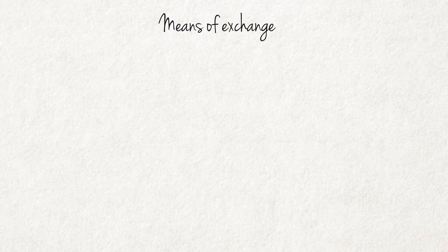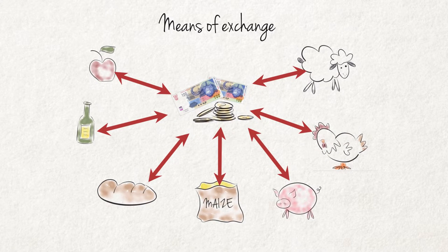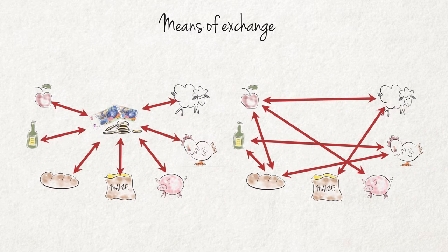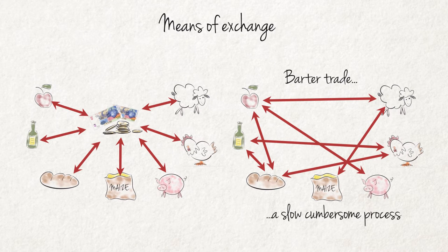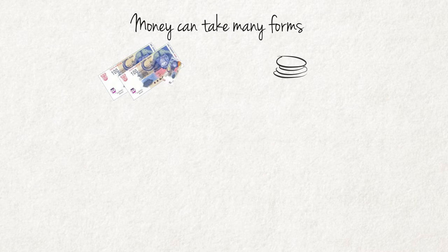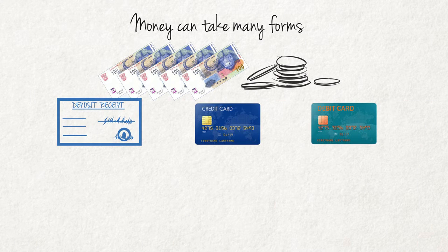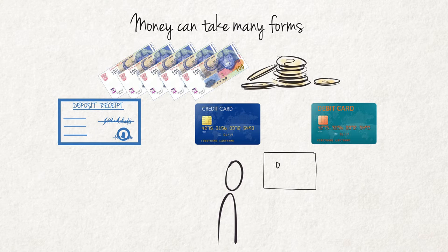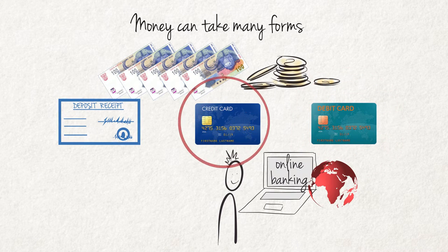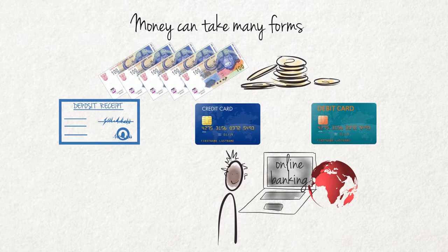Money has three basic functions. Means of Exchange: Money plays a crucial role in any economy, as it is an easy means of exchange when people trade. Without money, only barter trade — goods exchanged for goods — can take place, which is a slow and cumbersome process. In trade, not only banknotes and coins are important forms of money, but bank deposits and available credit — for instance, the unused balance on a credit card — are also available for purposes of trade. Many people trade by means of internet banking or debit and credit cards and hardly use banknotes and coins. Money can therefore take many forms, and the choice of which form to use is determined by convenience.